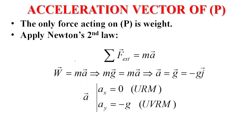We apply Newton's second law: the sum of external forces equals mass times acceleration. Since the only force acting on a free-fall object is weight, we get W equals ma, so mg equals ma. Dividing both sides by m gives a equals g. Free fall means a equals g because there is no other force besides weight.